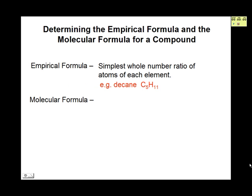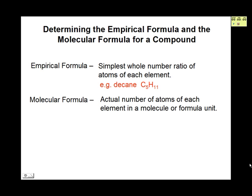The molecular formula is the actual number of atoms of each element in a molecule or formula unit. For example, the molecular formula for decane is C10H22. A molecule of decane has 10 carbon atoms and 22 hydrogen atoms.